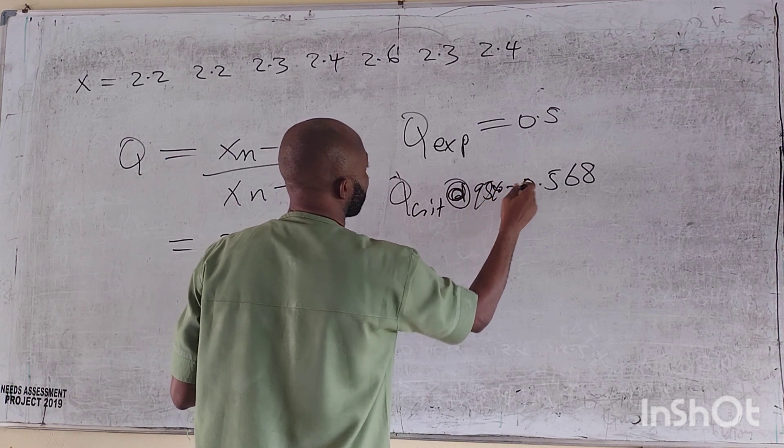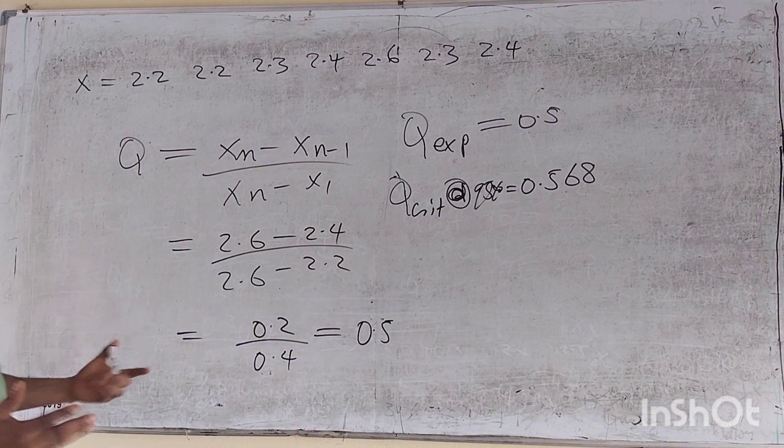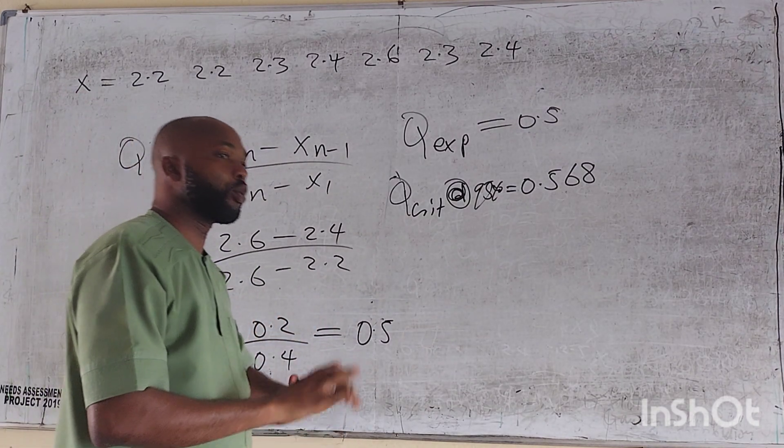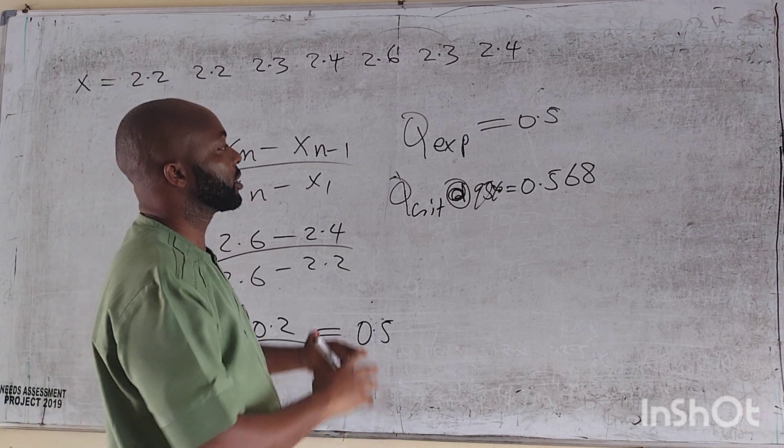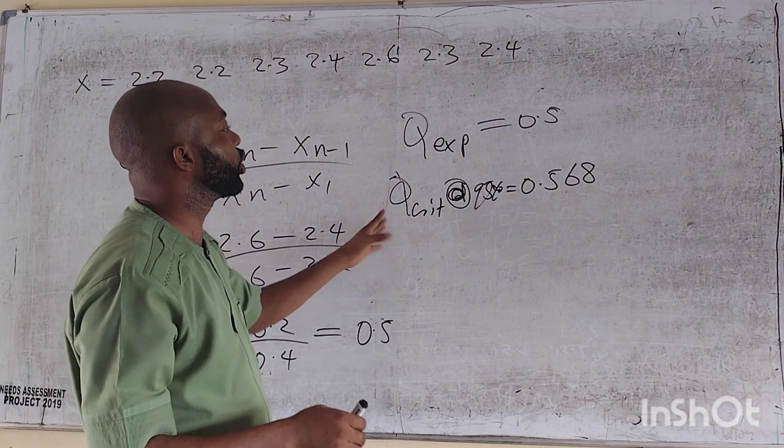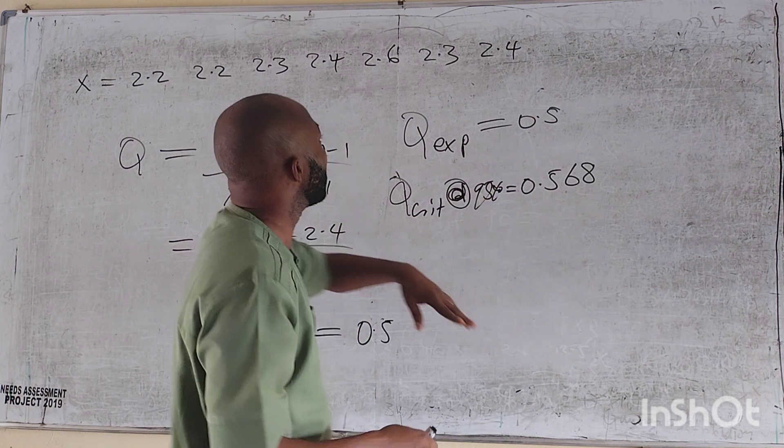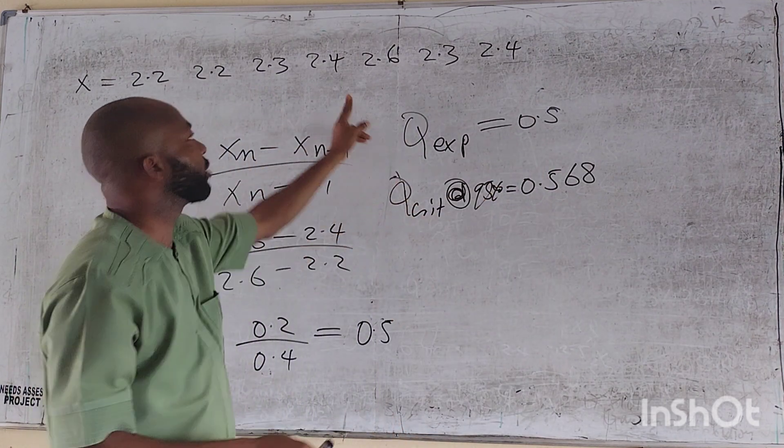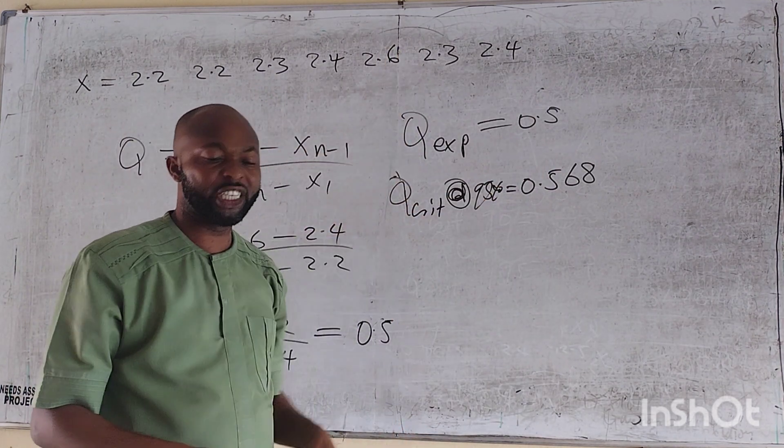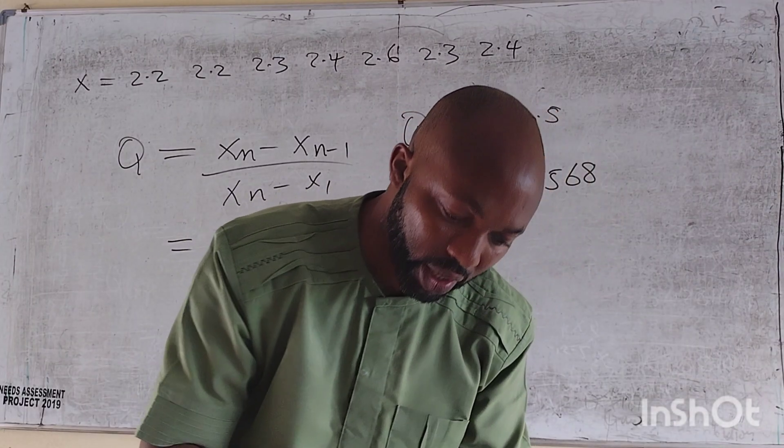So we say when the Q-critical is greater than the Q-experimental, we retain. When it is less than, we reject. So here, the Q-critical is greater than the Q-experimental, 0.5. So the variable or the outlier 2.6 should be retained.